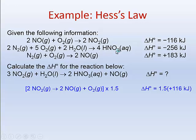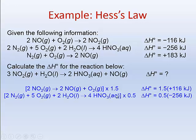For the second reaction, it appears to be in the right order — nitric acid is a product here and also a product in the overall reaction. The only issue is that step two produces four nitric acids, while the overall reaction only produces two, so we multiply by 0.5. We bring down the negative 256 kilojoules and multiply by 0.5. To summarize: the only things we ever do are keep the reaction in its current order or reverse it, change the sign if reversed, and then apply a multiplier to match the overall reaction's coefficients.